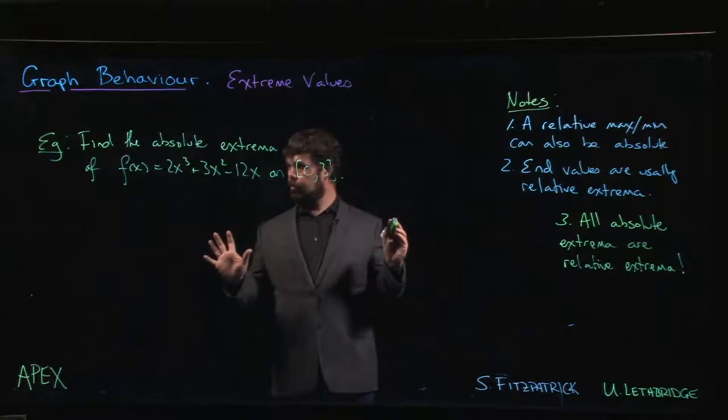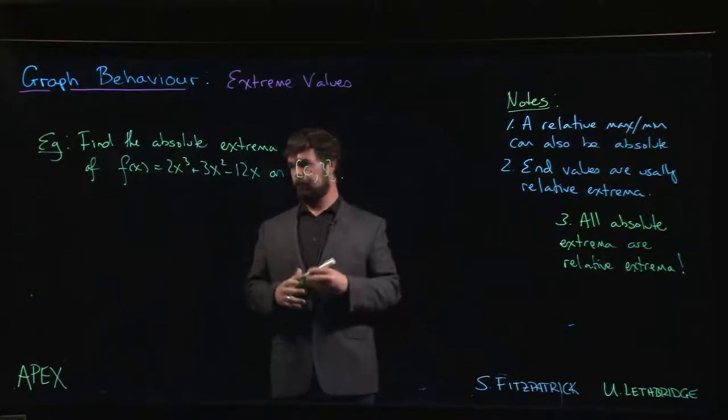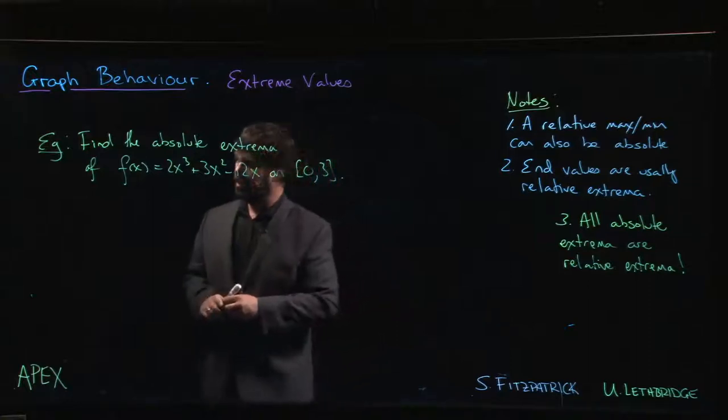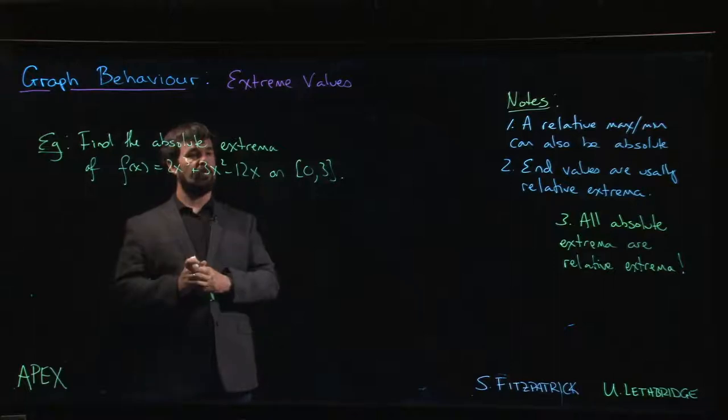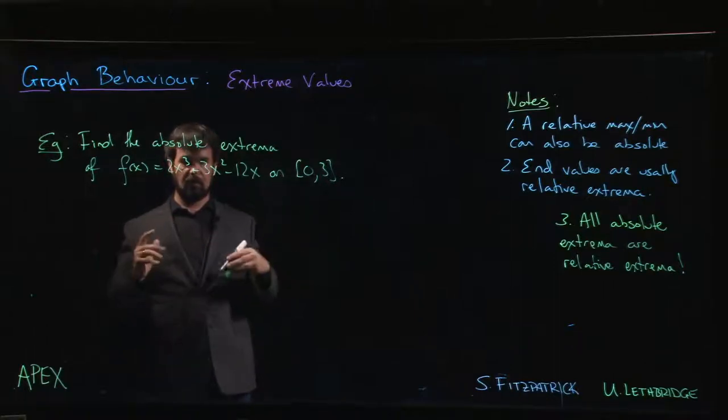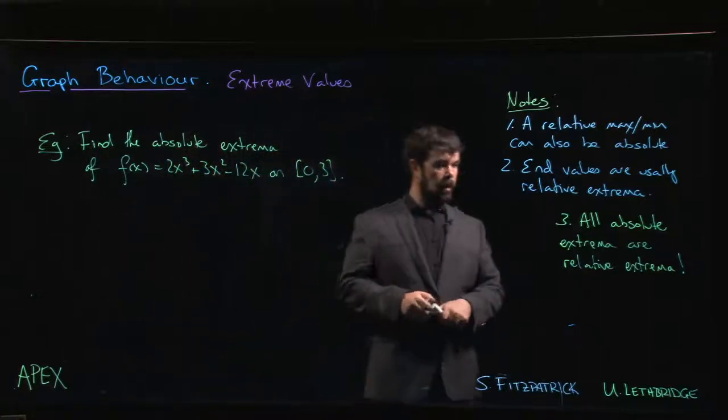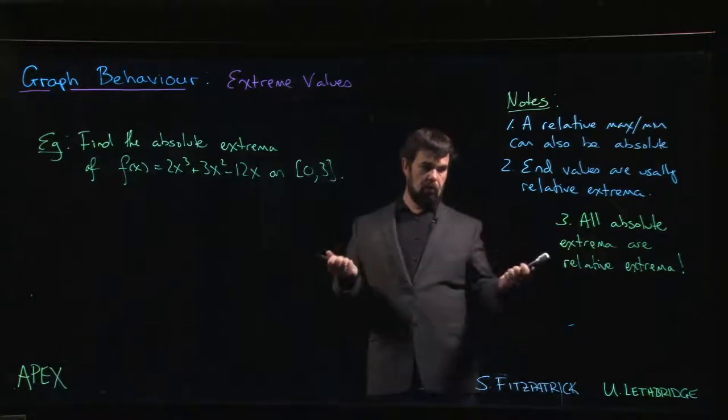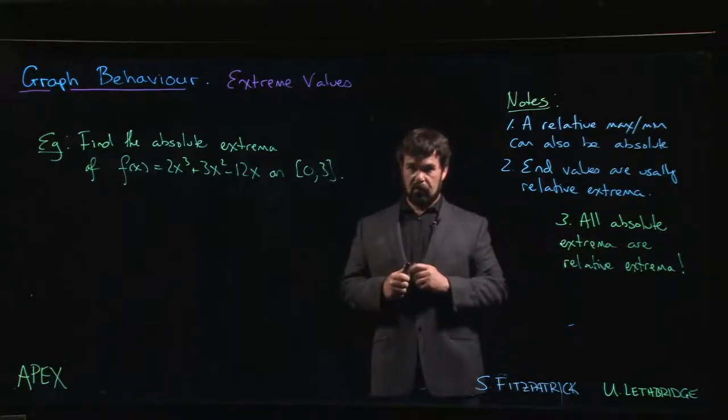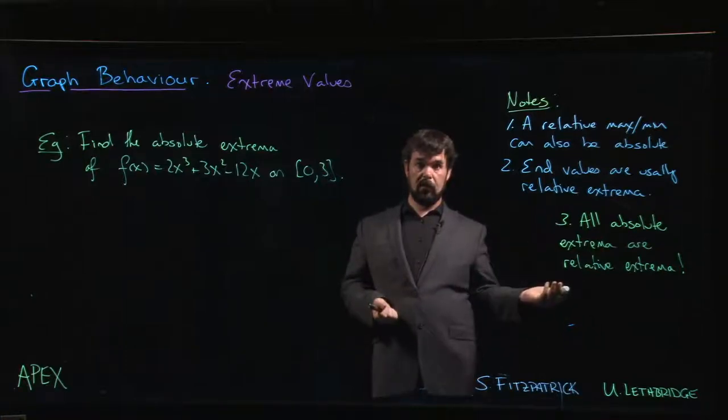We're ready to look at an example where we compute the absolute extreme values of a polynomial function, which is definitely continuous on a closed interval. We know that the absolute extreme values exist, guaranteed by the extreme value theorem. How do we find them? We know that absolute extreme values are also relative extreme values, and there are two possible places where those relative extreme values can occur: a critical point or an endpoint.